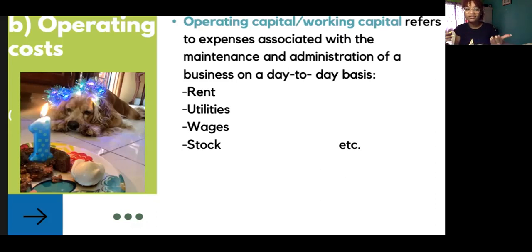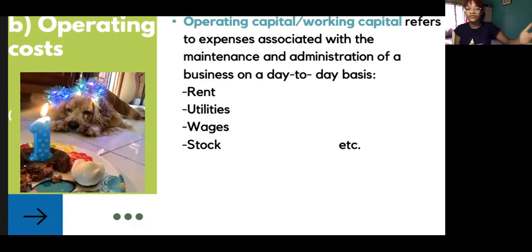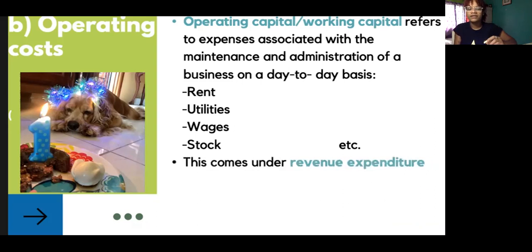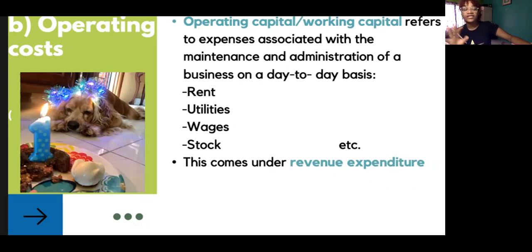These are just some examples of the things you will have to put money behind to keep the business open. It will differ depending on the type of business — if you are running an online store selling masks on Instagram, you're not going to have to pay rent or utilities because you're probably running it from your bedroom. You might not have to pay wages depending on the size of the business, but you'd more than likely have to pay for stock. These are just examples; it will differ depending on the type of business. This comes under revenue expenditure — things that are for the day-to-day running of the business.